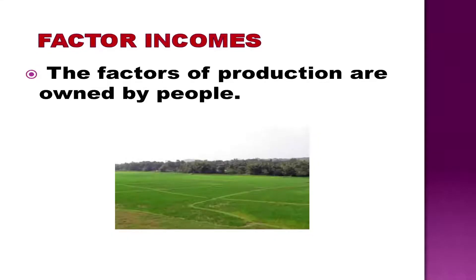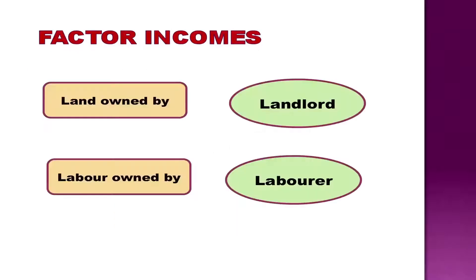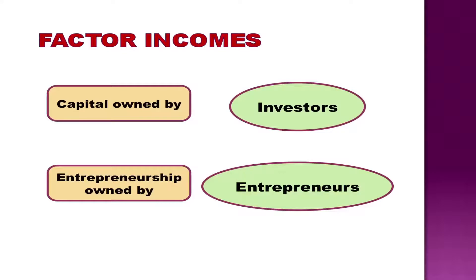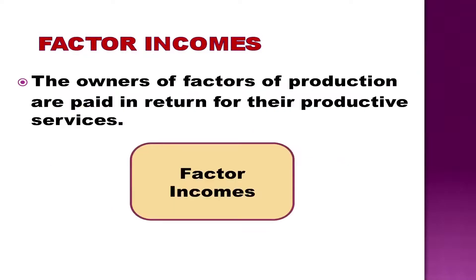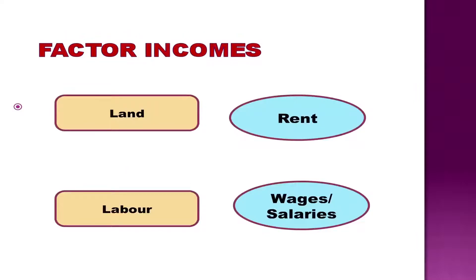The factors of production are owned by people. Land is owned by the landlord. Labor is owned by a laborer. Capital is owned by people who acquire capital goods. And entrepreneurship is owned by the entrepreneur. The owners of factors of production are paid in return for their productive services. When you hire a piece of land, you pay rent to the landlord for using the services of land. Thus, the tenant pays rent for the services of land used.